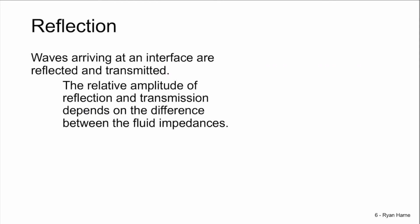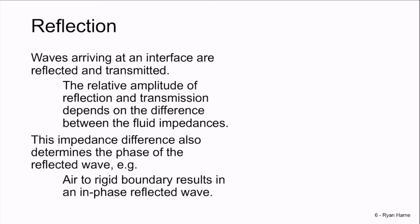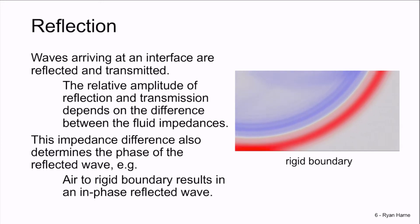Reflection occurs when waves arrive at interfaces. In this case, part of the wave is reflected and part of the wave is transmitted. The relative amplitude of reflected and transmitted waves depends on the differences between the fluids of the interface. In this video, the wave arrives at a rigid boundary and reflects in phase. It's this impedance difference between the fluid and the boundary that governs the phase of the reflected wave.